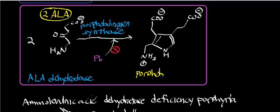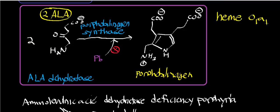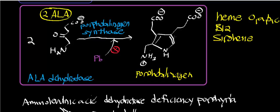Porphobilinogen is extremely important in all organisms making molecules like this, because not only are all types of heme — heme O, A, B, and C — made from porphobilinogen, but also things like vitamin B12 and siroheme. There are all sorts of molecules that ultimately come from porphobilinogen, making it an extremely important molecule. The enzyme that transforms two delta-aminolevulinic acids into porphobilinogen is called porphobilinogen synthase.